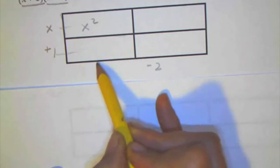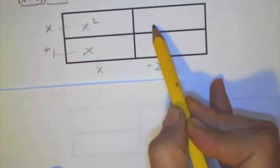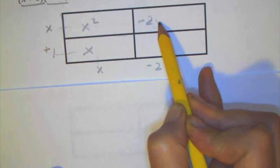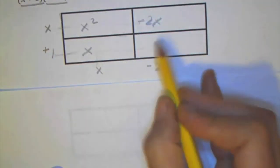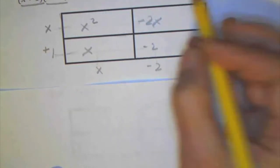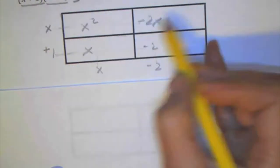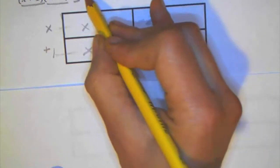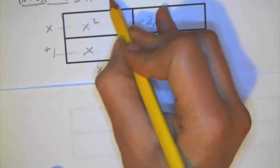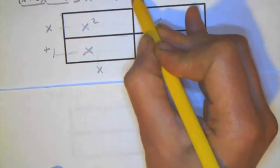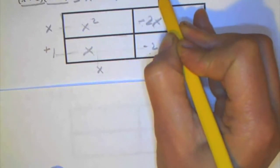This is 1 times x, so that's x. On this side, it's x times negative 2, that's negative 2x. Here's 1 times negative 2, so that's negative 2. And then I write down, so it's the sum of all of those. So x squared plus negative 2x, or just minus 2x, plus x minus 2.